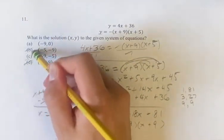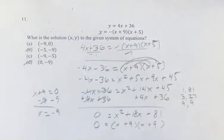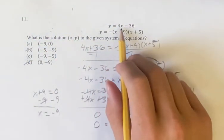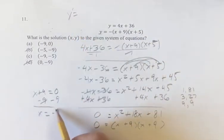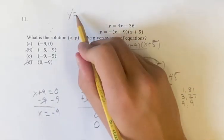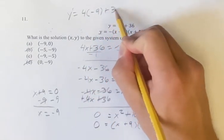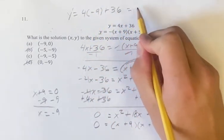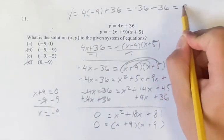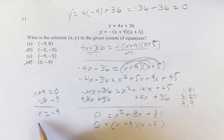To make sure C is still the answer, how do we find y? Well, we know that y is equal to 4x plus 36, and we know now x is negative 9. So y is equal to 4 times negative 9 plus 36. 4 times negative 9 is negative 36 plus 36 is going to be equal to zero. So x is negative 9, y is zero.